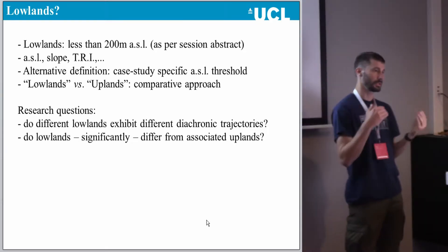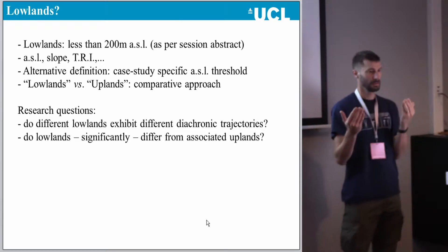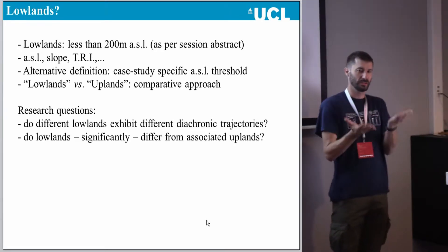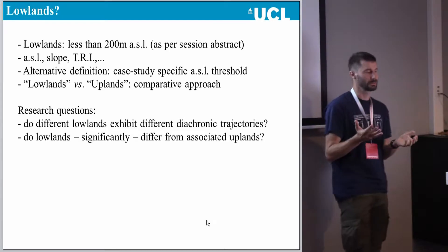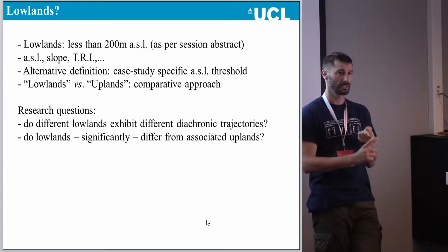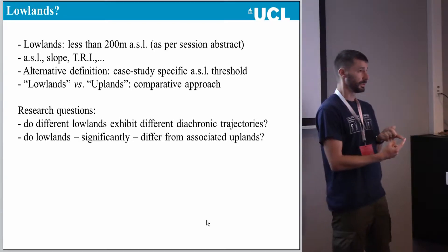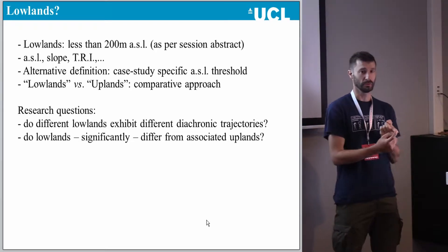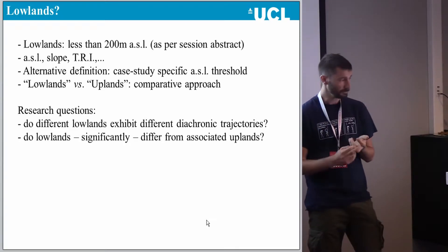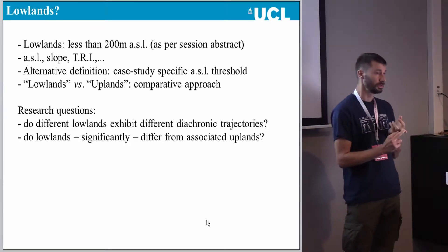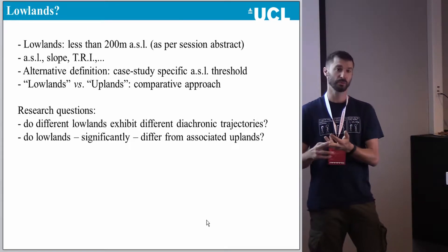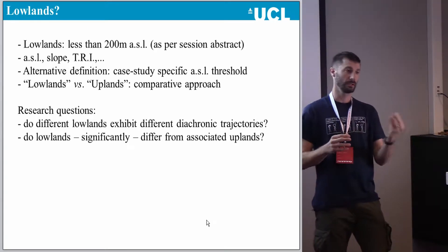What is actually very important is not so much to look at the lowland in isolation, but to look at the lowland in connection to its associated upland — even if those uplands are not necessarily mountainous. What I want to see is: firstly, do different types of lowlands across northwestern Europe have different trajectories? And secondly, do lowlands actually differ from corresponding uplands — is there a point to singling out lowlands as a valid analytical unit?